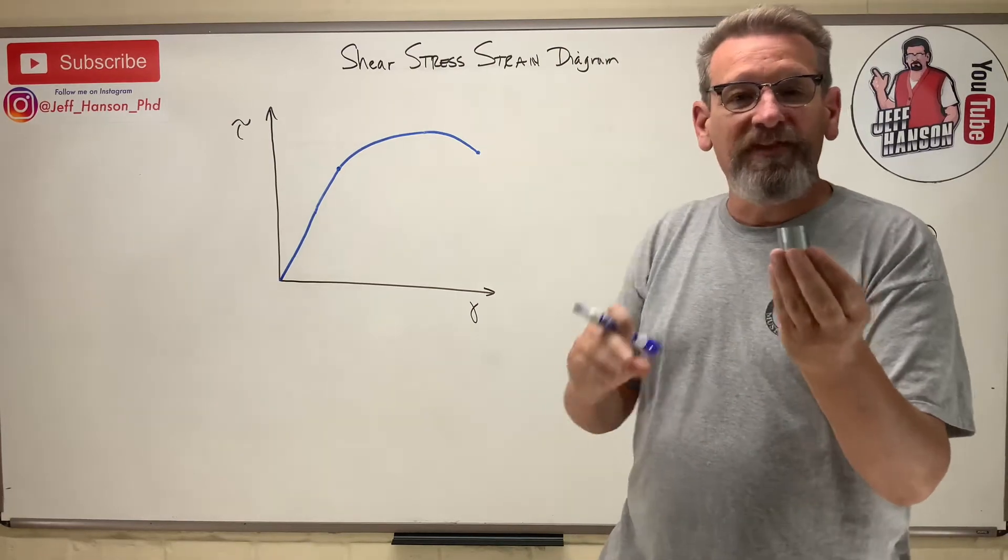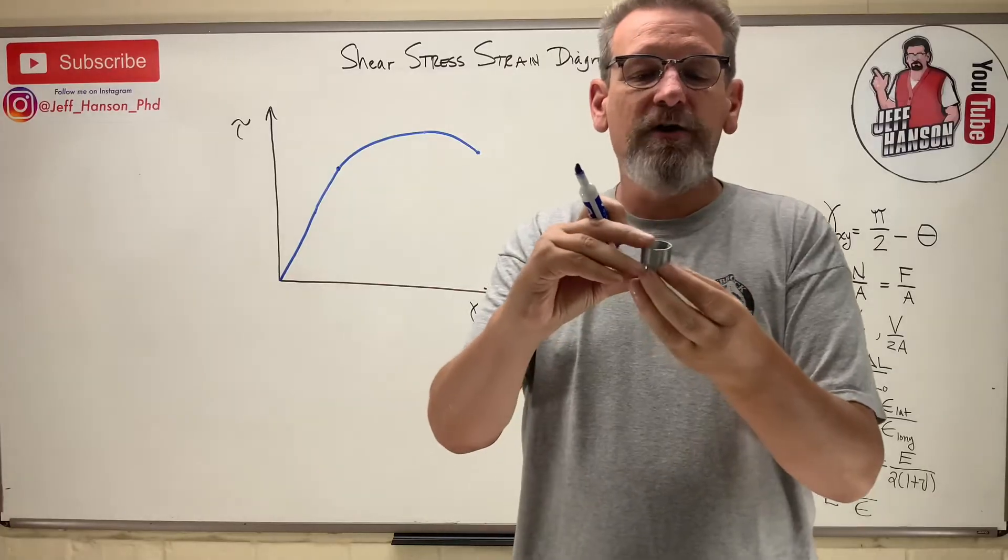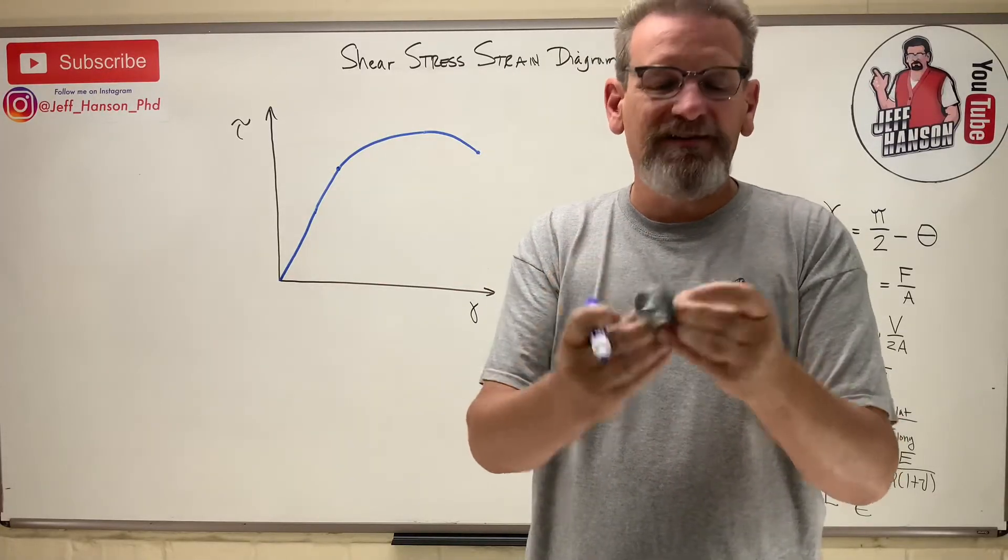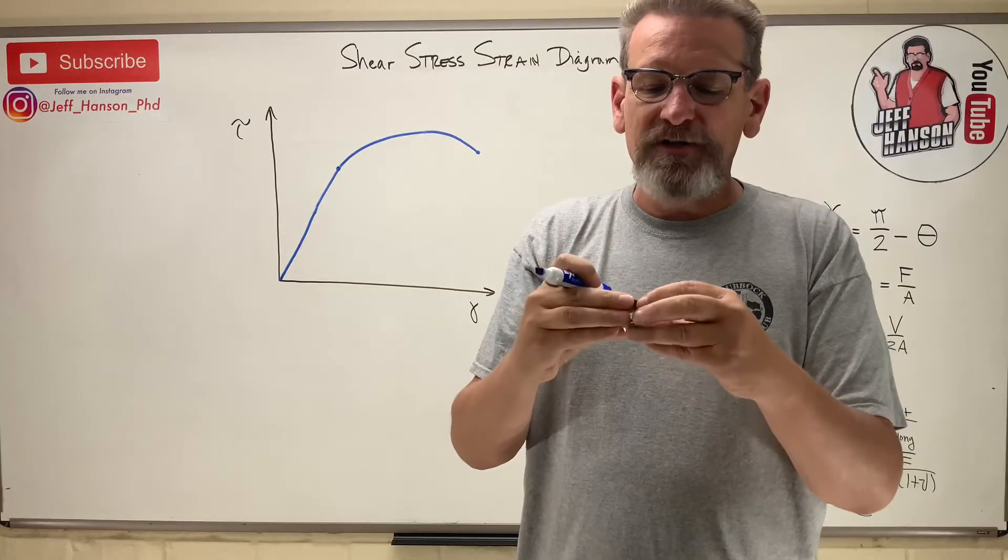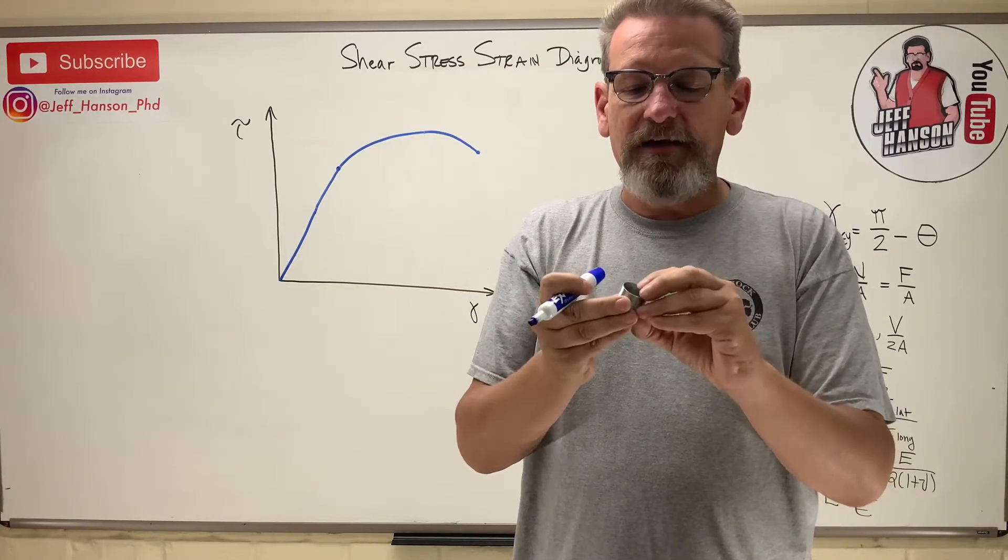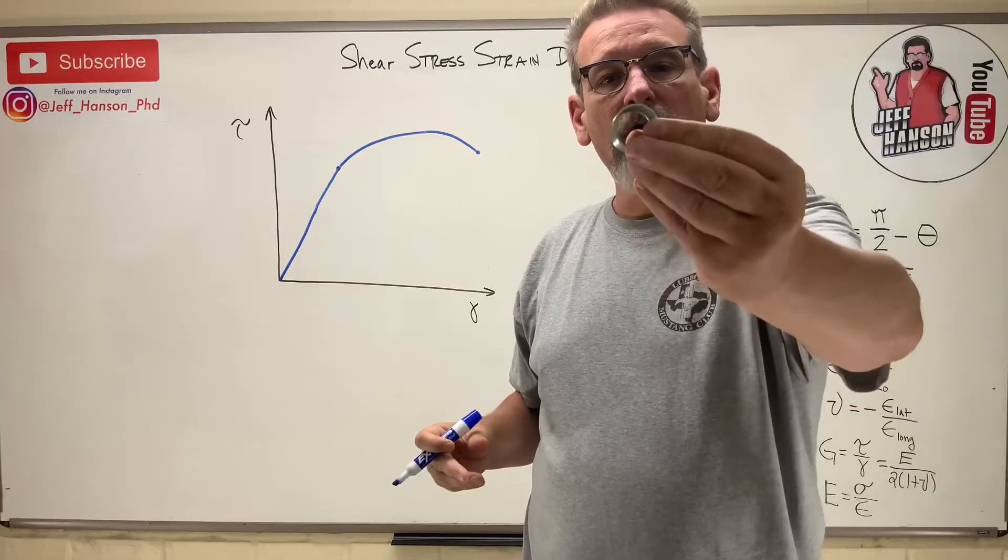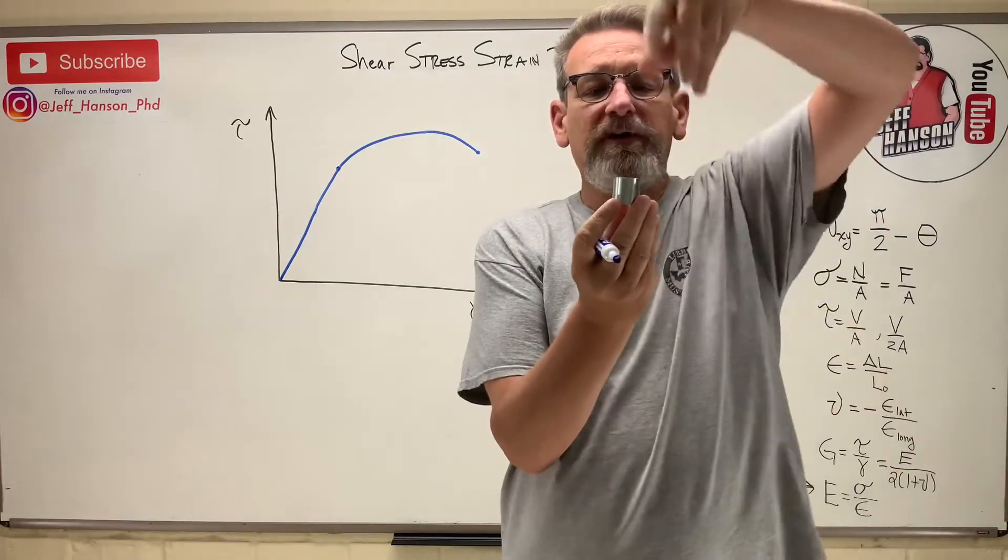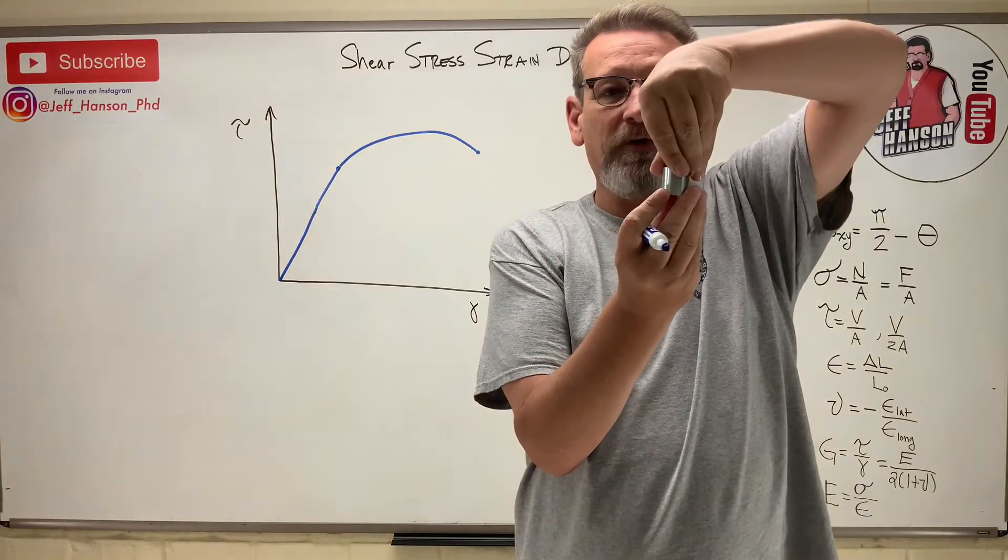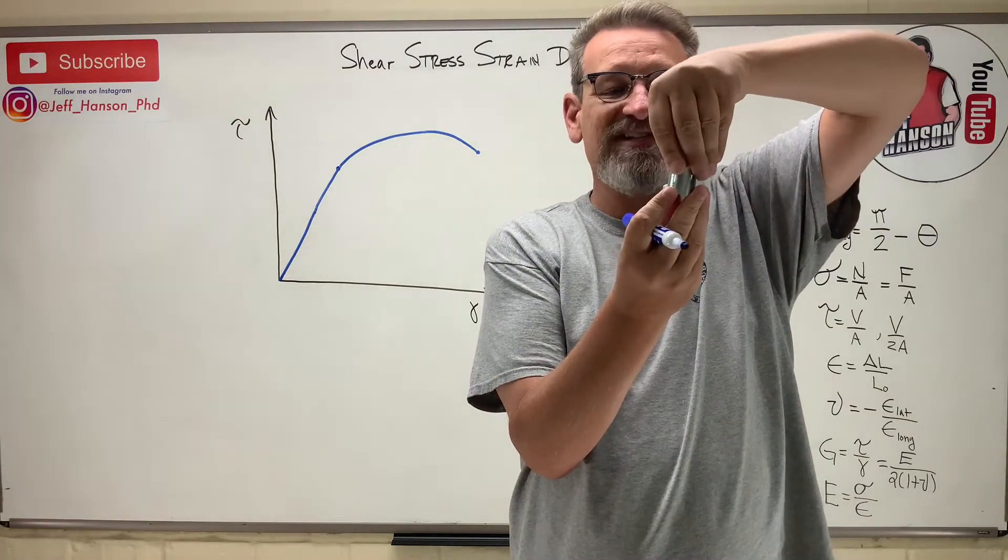Well actually, it comes from this. So here is, this is not, they do not test it with slinkies. This is a slinky, but imagine this is just a thin hollow metal tube. And they take this metal tube and clamp it on both ends, and then they start to twist it.